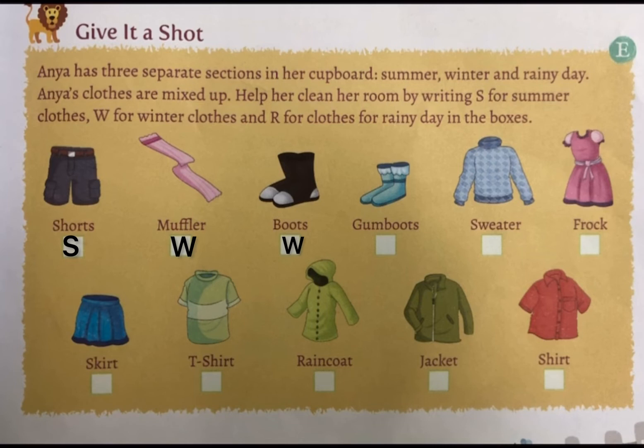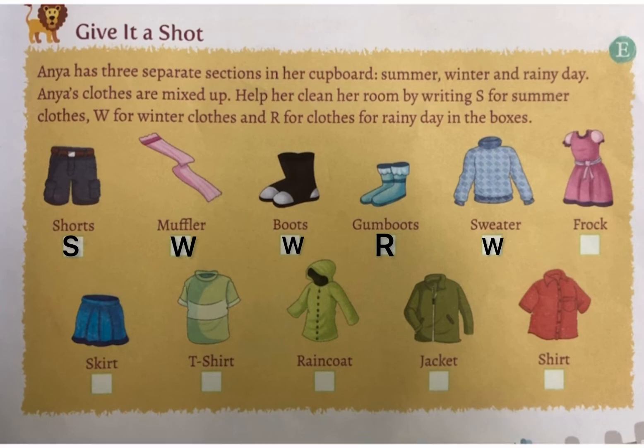Gum boots keep our feet dry, so write R in the box. Next is sweater — we wear sweater in the winter season, so write W in the box. Next is frock — girls wear frock in the summer season, so write S in the box.